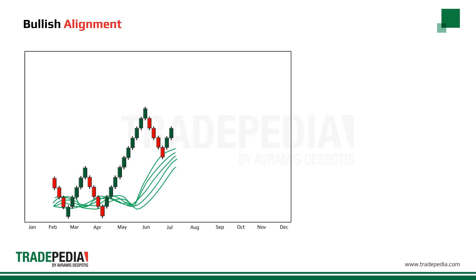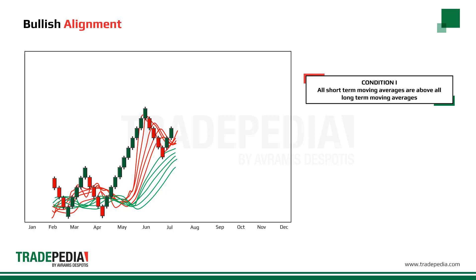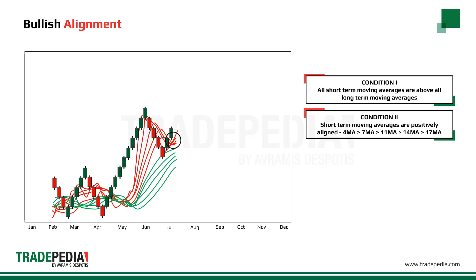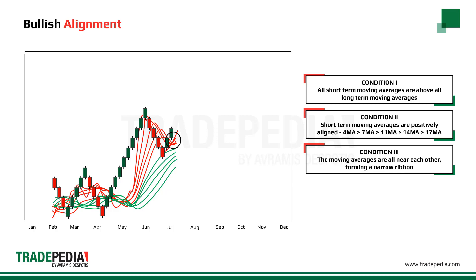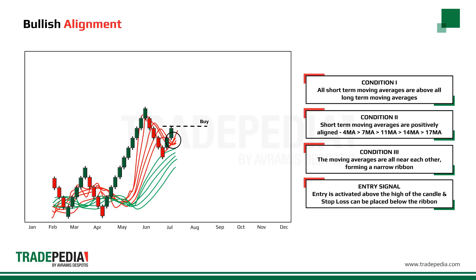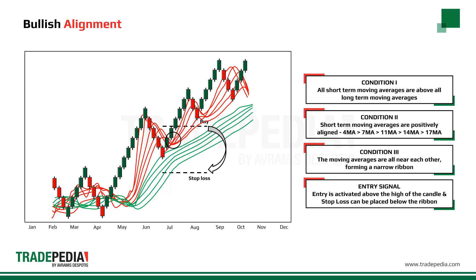A bullish alignment signal is given when the following conditions are met. Condition one: all short-term moving averages are above all long-term moving averages. Condition two: all short-term moving averages are positively aligned — that is, the 4 period goes above the 7th, the 7th above the 11th, the 11th above the 14th, and so on. Condition three: the moving averages are all near each other, forming a narrow ribbon. The entry is activated above the high of the candle that generated the signal, and a stop-loss can be placed below the moving average ribbon.